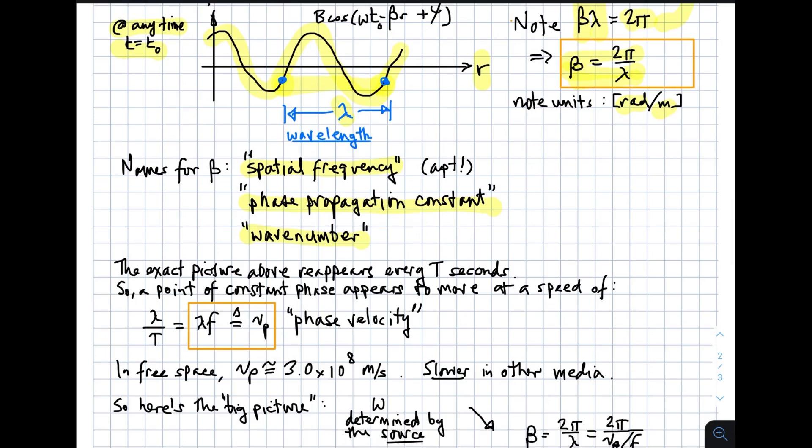So this exact picture that I've shown up here, this recurs every T seconds. Once every period, I get back this exact same picture. So a point of constant phase appears to move at a speed equal to the wavelength divided by the period, which is wavelength times frequency, and we call that quantity the phase velocity.